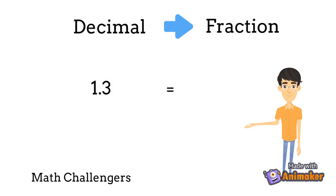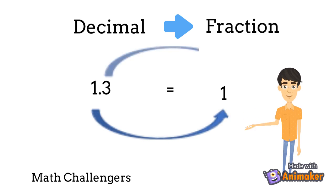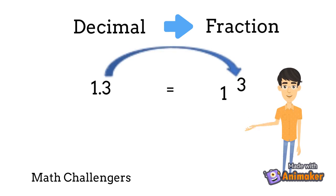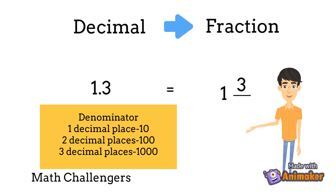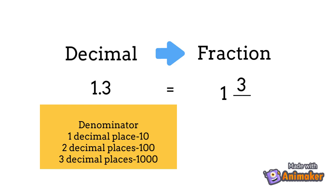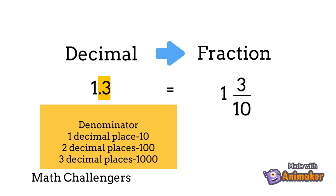To change 1 and 3 tenths to a fraction: the digits on the left side of the decimal point are the whole number, and the digits on the right of the decimal point become the numerator. The denominator depends on the number of decimal places — 1 decimal place means denominator 10, 2 decimal places means 100, 3 means 1000. In this case we have 1 decimal place, so the denominator is 10. Make sure to reduce the fraction to its lowest term if possible.